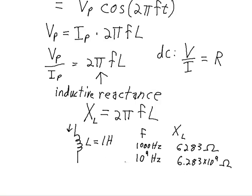So you increase the frequency and your inductive reactance goes way up. Inductors don't like high frequencies — they're going to really present an opposition to high frequencies. Now if we decrease the frequency way down to 1 Hz, getting really close to DC, we get an inductive reactance of 6.283 ohms. And as you get closer and closer to DC — DC of course is 0 Hz — you plug in 0 and you get an inductive reactance of 0, which is how inductors behave in DC circuits once you've reached steady state: the inductor acts like a short.